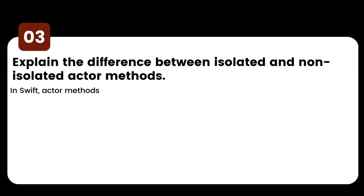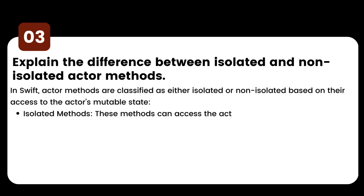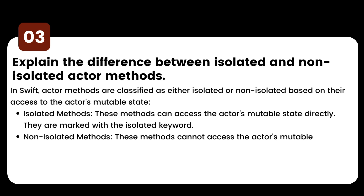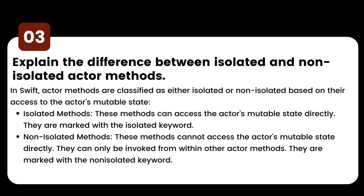Explain the difference between isolated and non-isolated actor methods. In Swift, actor methods are classified as isolated and non-isolated based on their access to the actor's mutable state. Isolated methods can access the actor's mutable state directly and are marked with the isolated keyword. Non-isolated methods cannot access an actor's mutable state directly; they can only be invoked from within other actor methods and are marked with the non-isolated keyword.